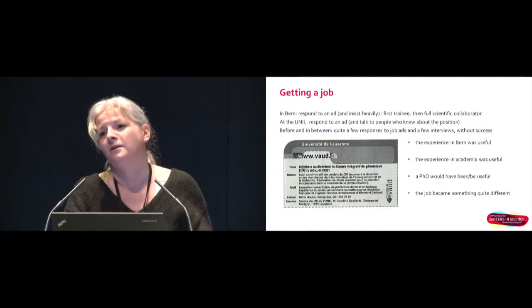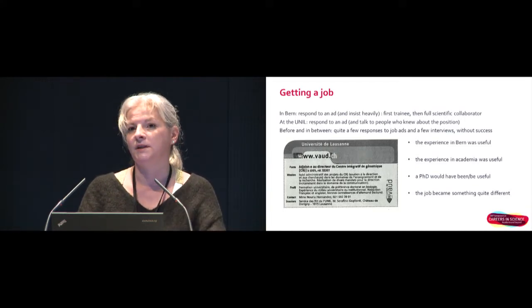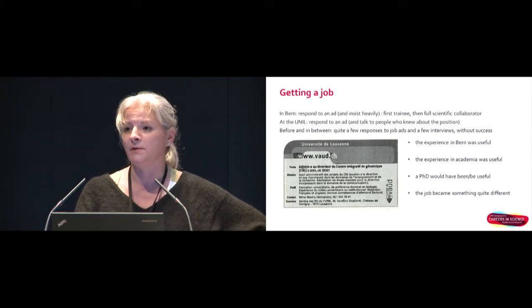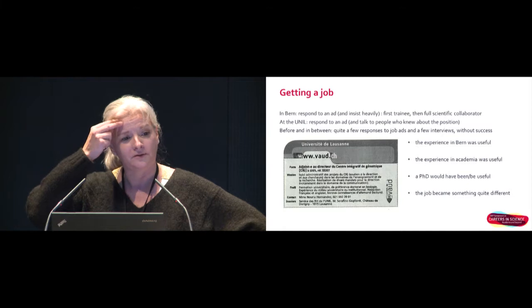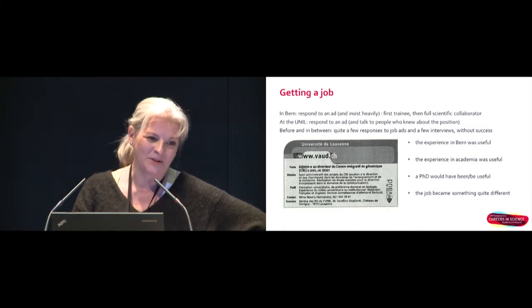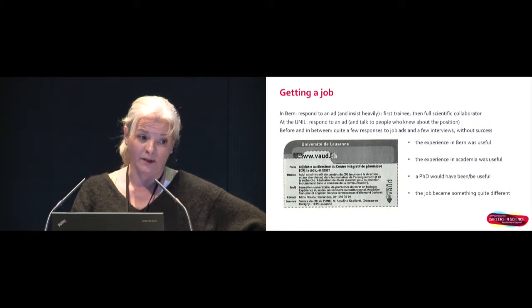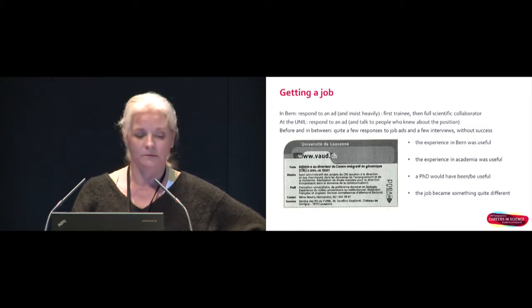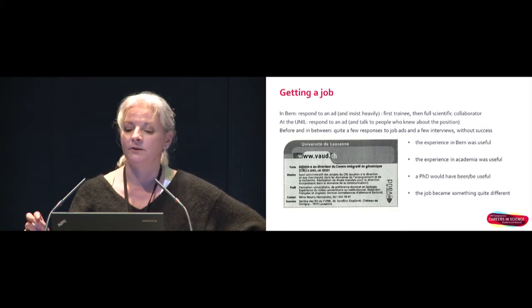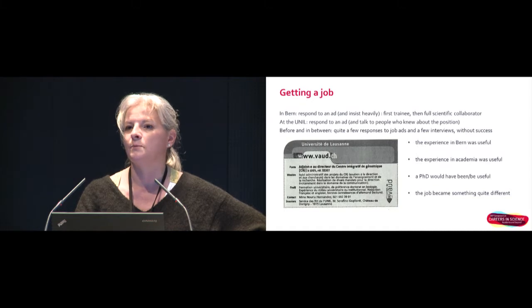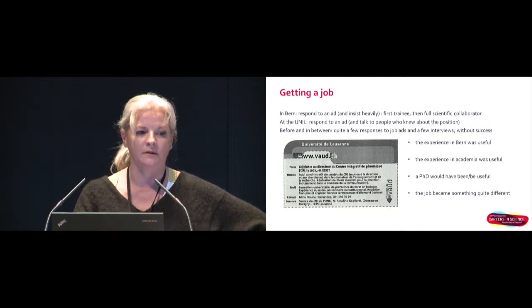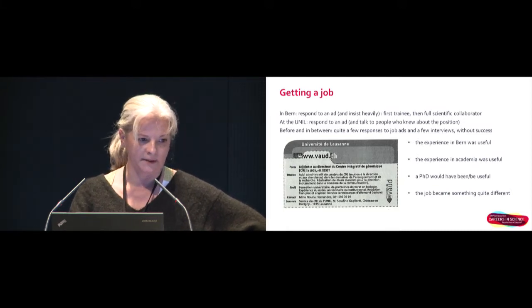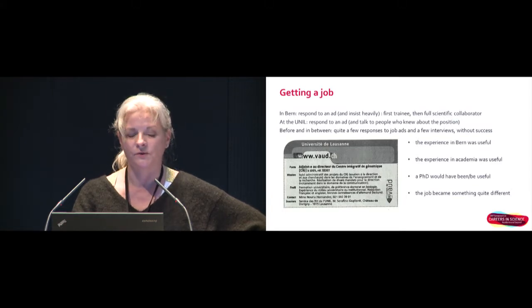How did I get the job? The first job outside of academia in Bern — I responded to an ad, but it was an ad for a traineeship. I had to insist heavily because I was considered overqualified and too old. I managed to get it, and being a trainee was not well paid, but coming out of academia where I was paid 50% it was still all right. Then I got a position as a full scientific collaborator. The job I have now at UNIL I also responded to an ad; I didn't know the people choosing the candidate at all. What helped was that I knew some people at the University of Lausanne with whom I could talk to better understand what was expected from the position, who I would be working with, and what the expectations were. I put the ads here to show that every experience was useful to get that job.